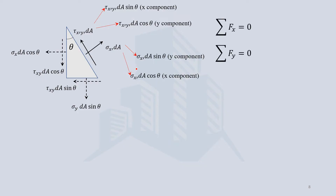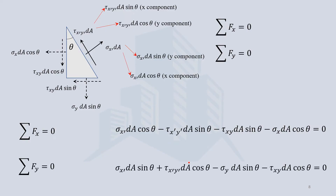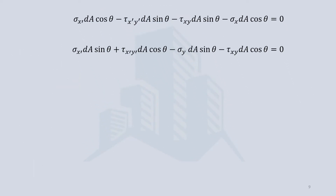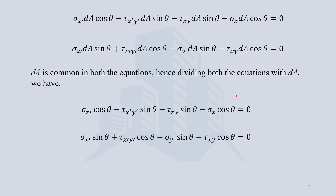Applying the first equilibrium condition — sum of all forces in the x direction equals zero — and the second condition — forces in the y direction equal zero — we get two equations. Since dA is common in each term, dividing through by dA leaves two simplified equations with two unknowns: sigma x-dash and tau x-dash y-dash.